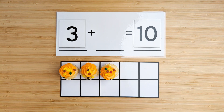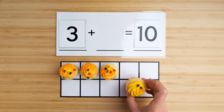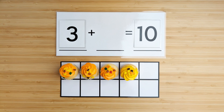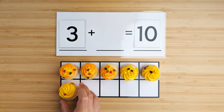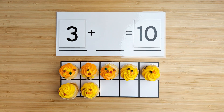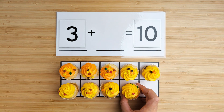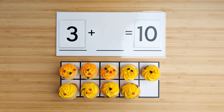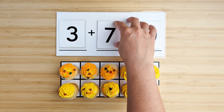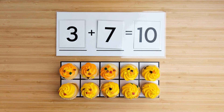Let's find out. One, two, three, four, five, six, seven. There are seven yellow cupcakes. Three and seven make 10.